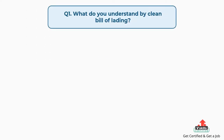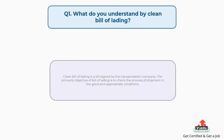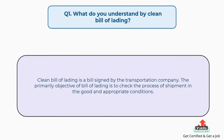Question number one: what do you understand by clean bill of lading? The answer is: a clean bill of lading is a bill signed by the transportation company. The primary objective of a bill of lading is to check the process of shipment in good and appropriate conditions.